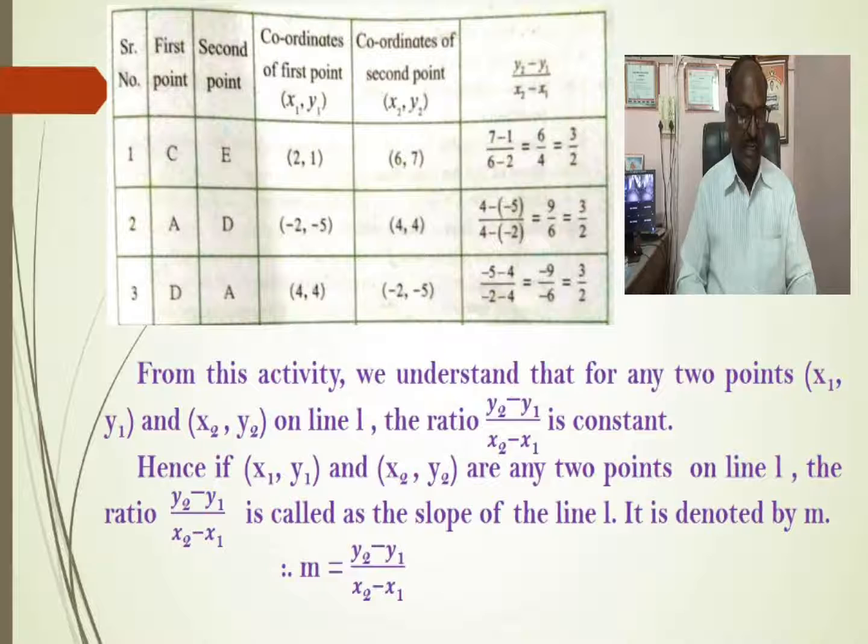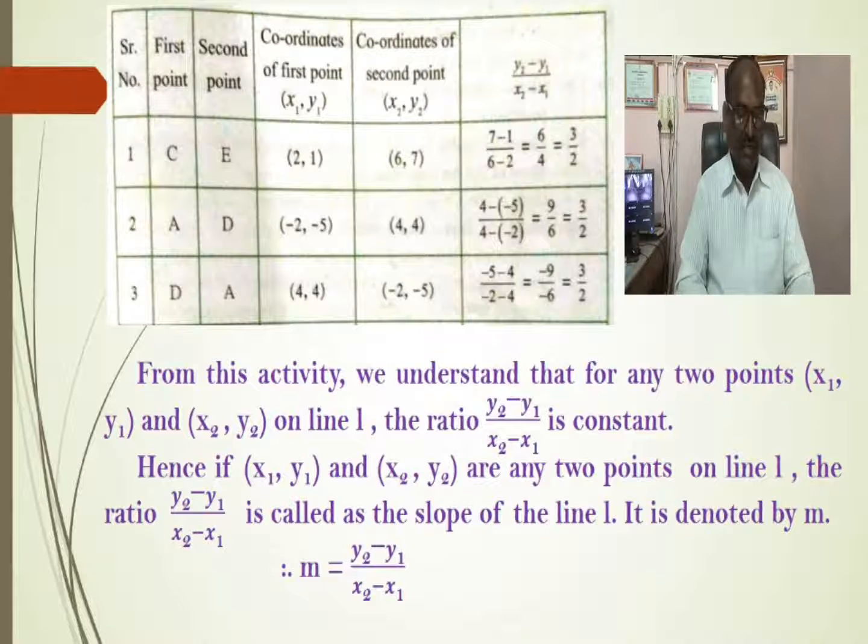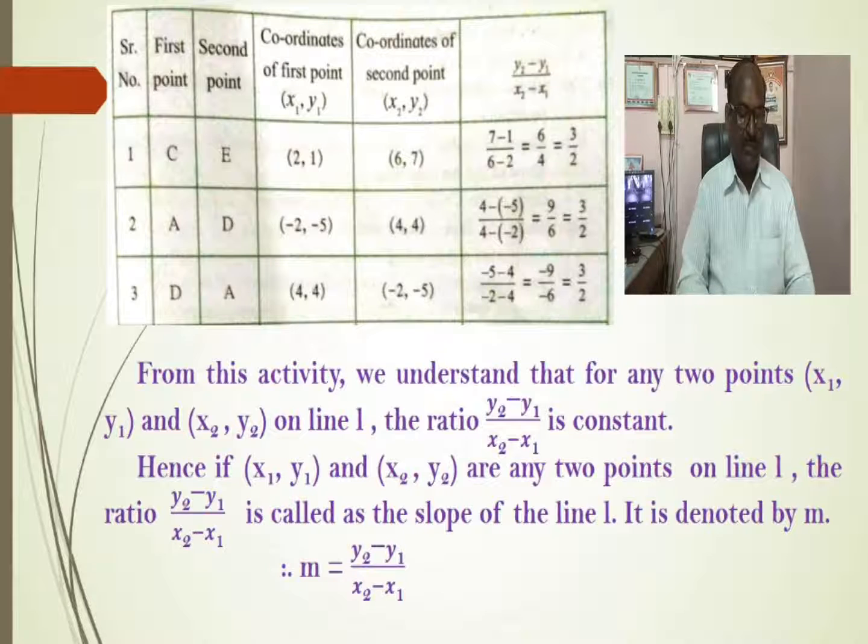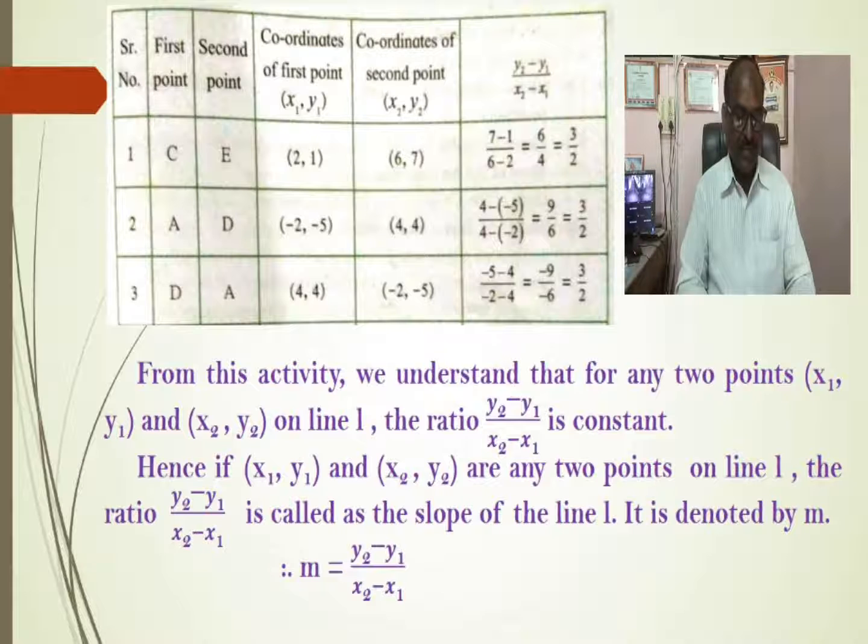In second example, we have taken point A and D. Their coordinates are (-2, -5) and (4, 4) respectively. The difference between Y coordinates, that is y2 - y1 is (4 - (-5))/(4 - (-2)), that is also equal to 3/2.